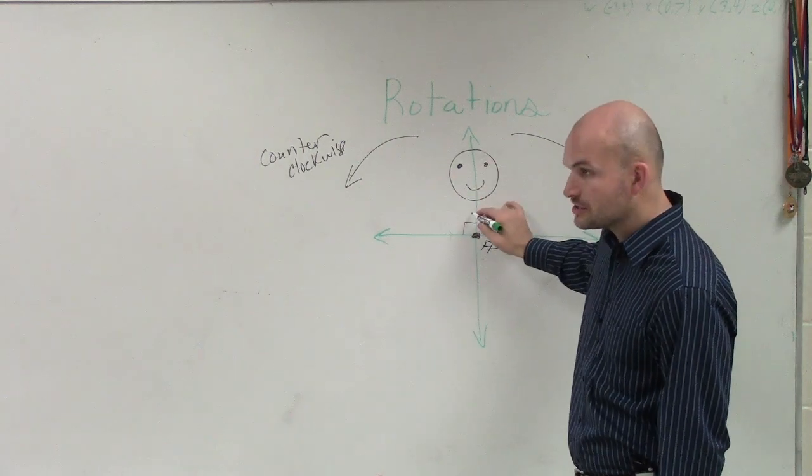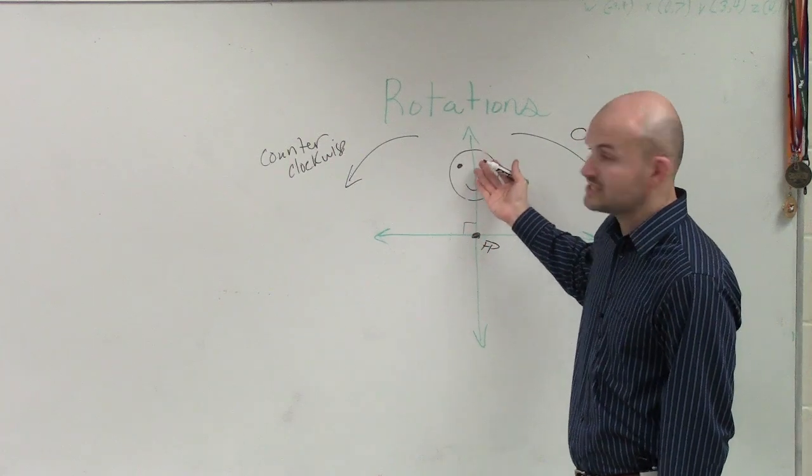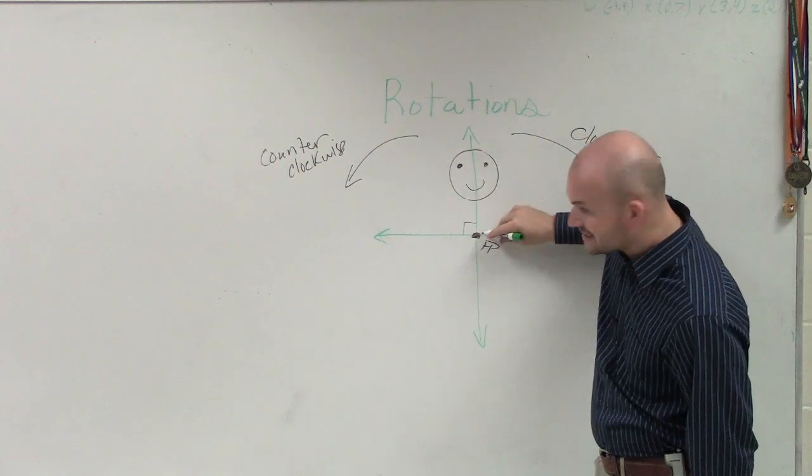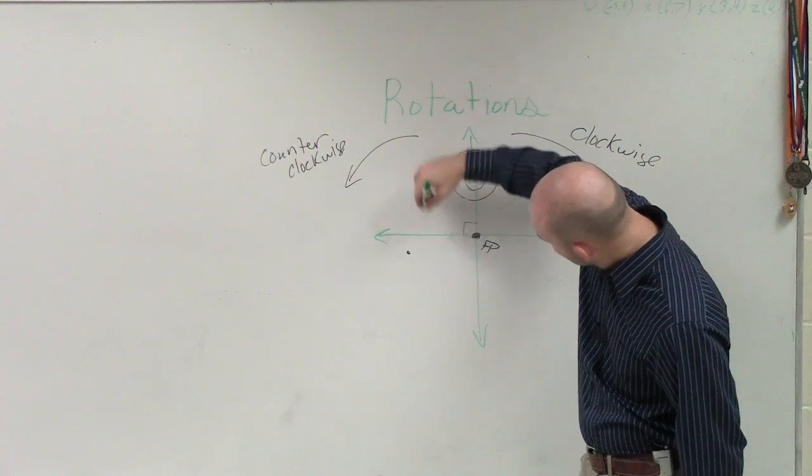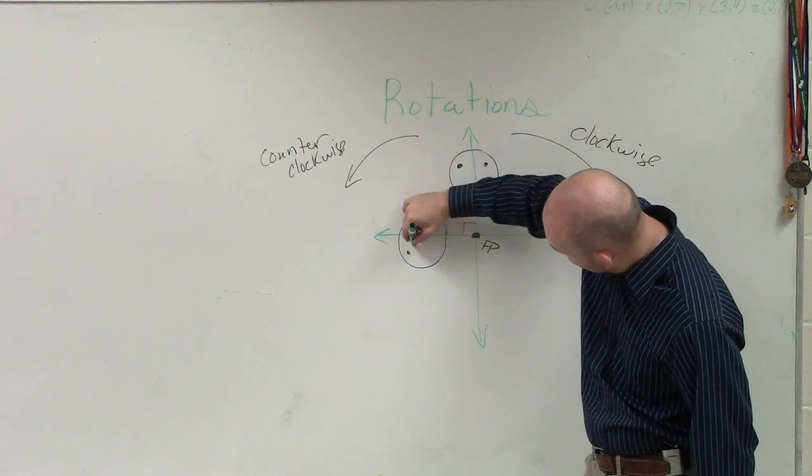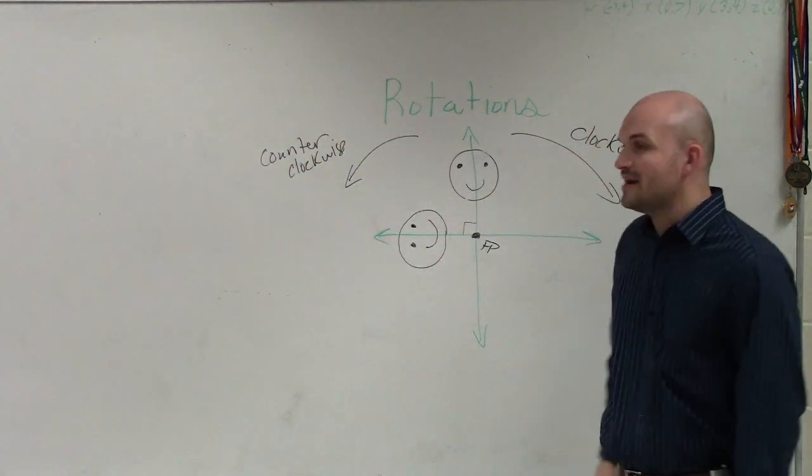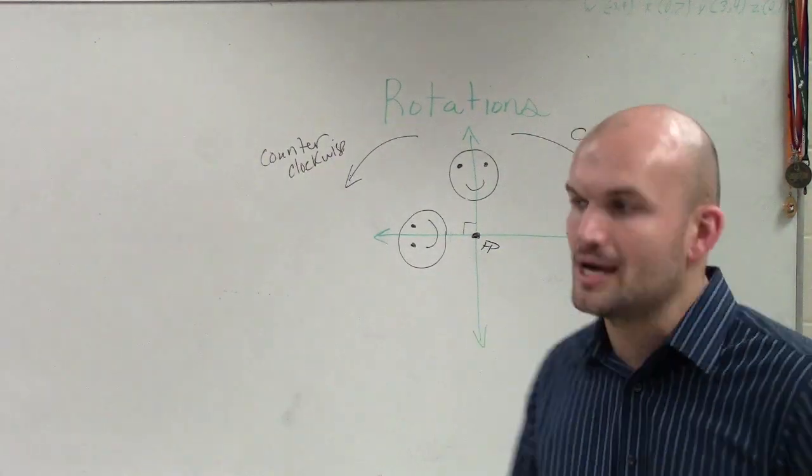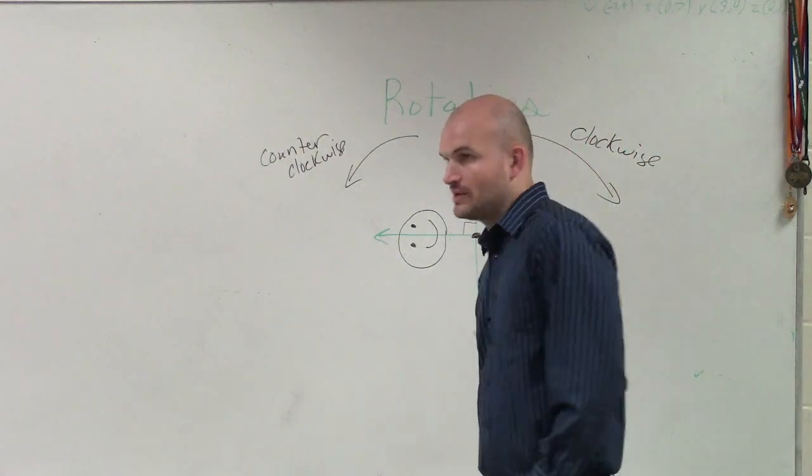So therefore, we know that if I was going to rotate something, if it's on this x-axis, and I wanted to rotate it counterclockwise 90 degrees, about this fixed point, it would look something like this. I know that's not the best, but that's what a rotation 90 degrees counterclockwise would look like about that fixed point, OK?